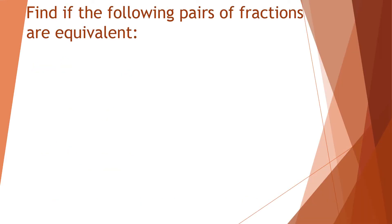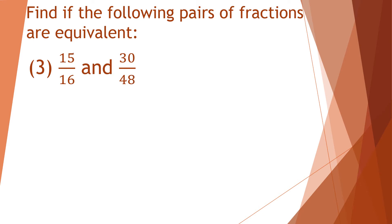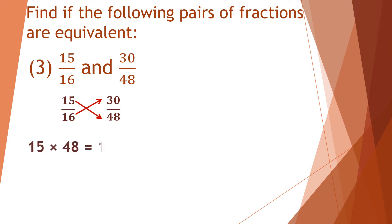Let us solve one more question. Question number 3: 15 upon 16 and 30 upon 48. Do the cross multiplication — that means we multiply the numerator of one side by the denominator of the other side. So 15 multiplied by 48 is equal to 16 multiplied by 30.